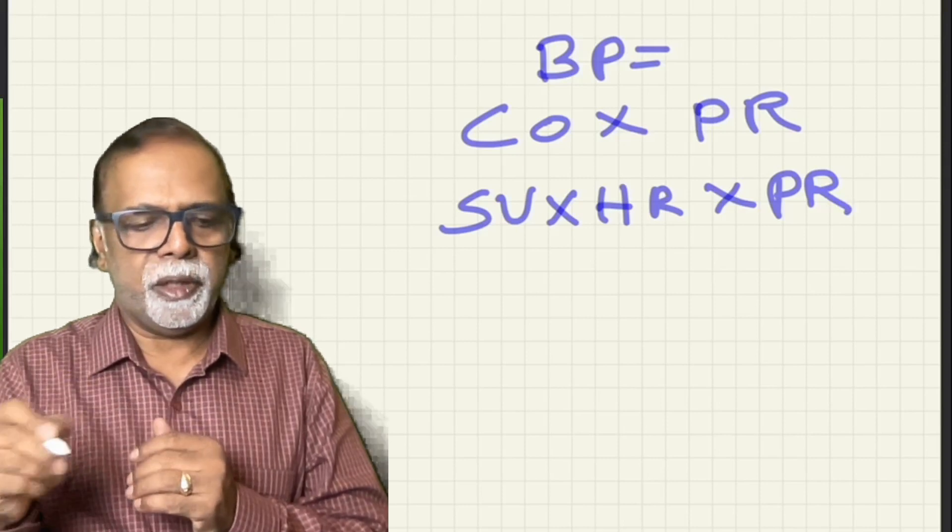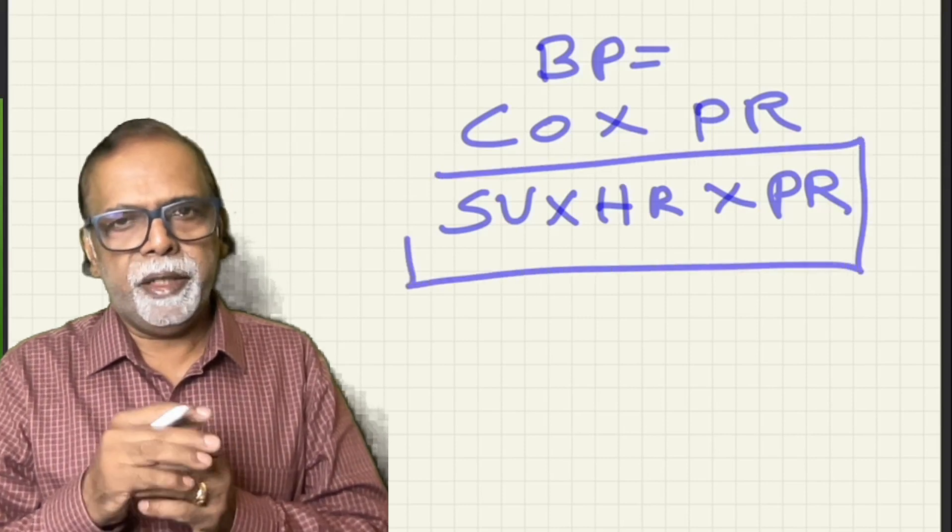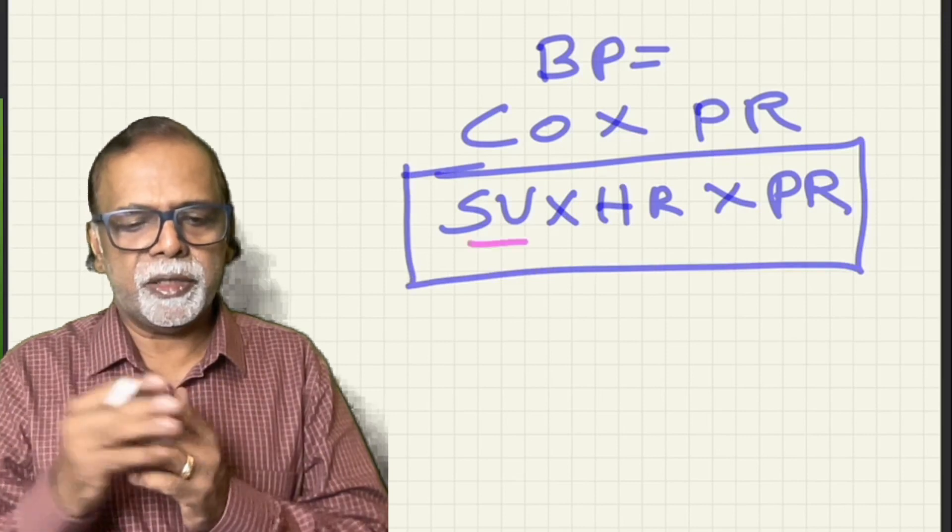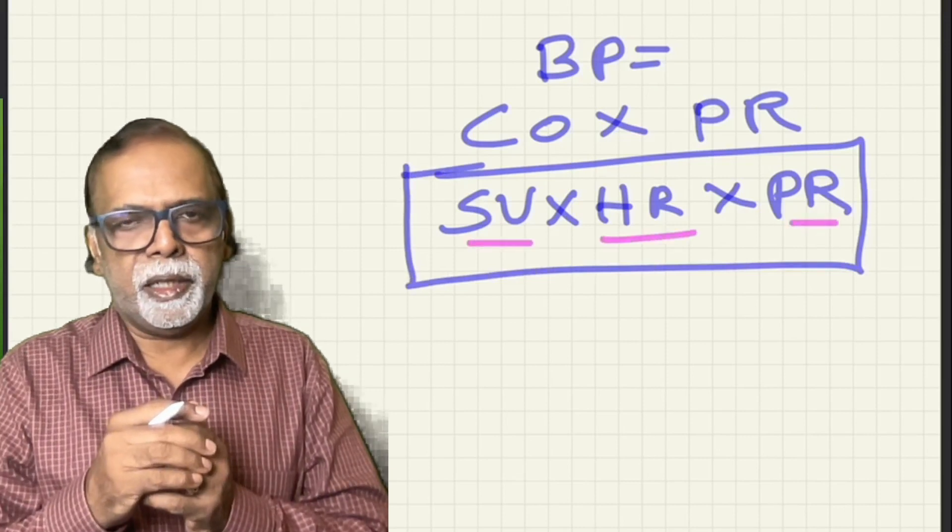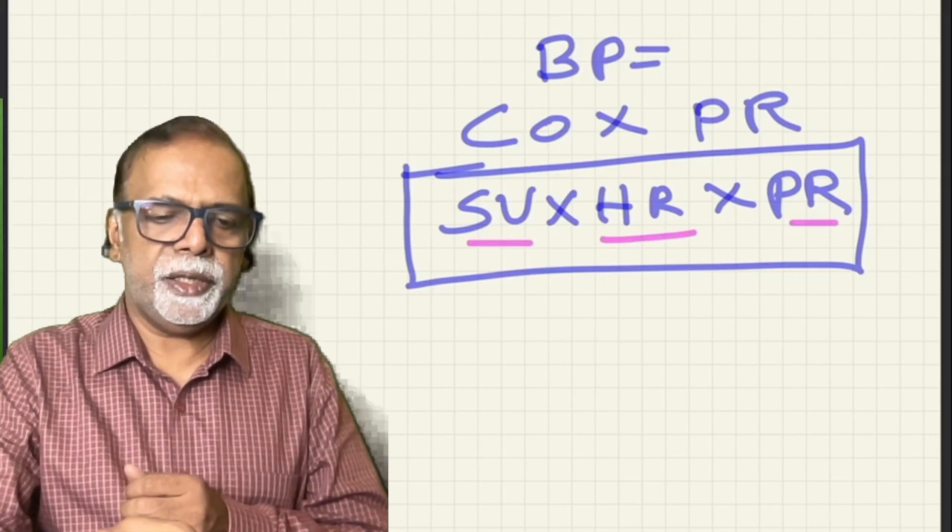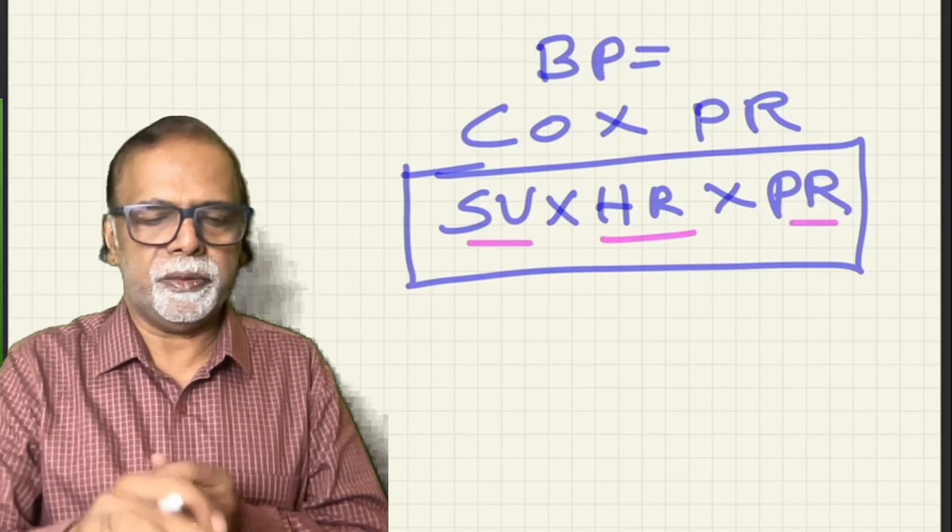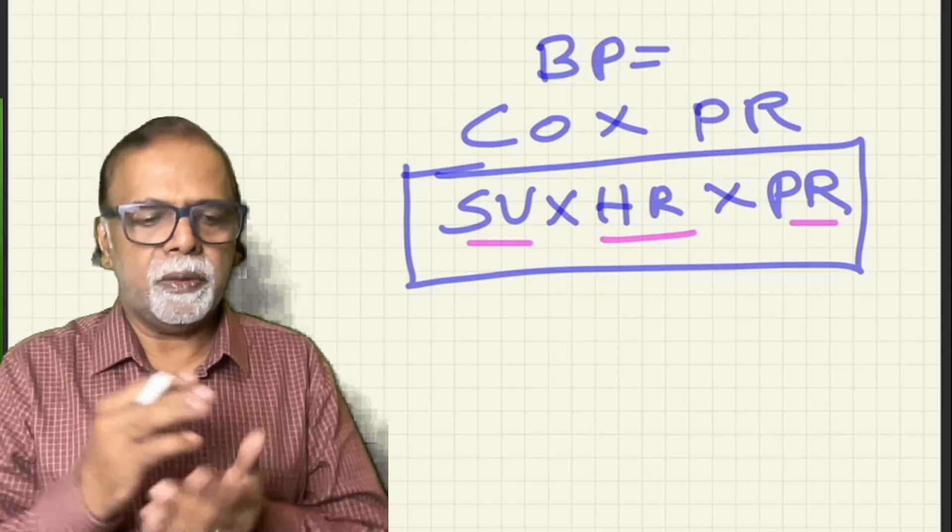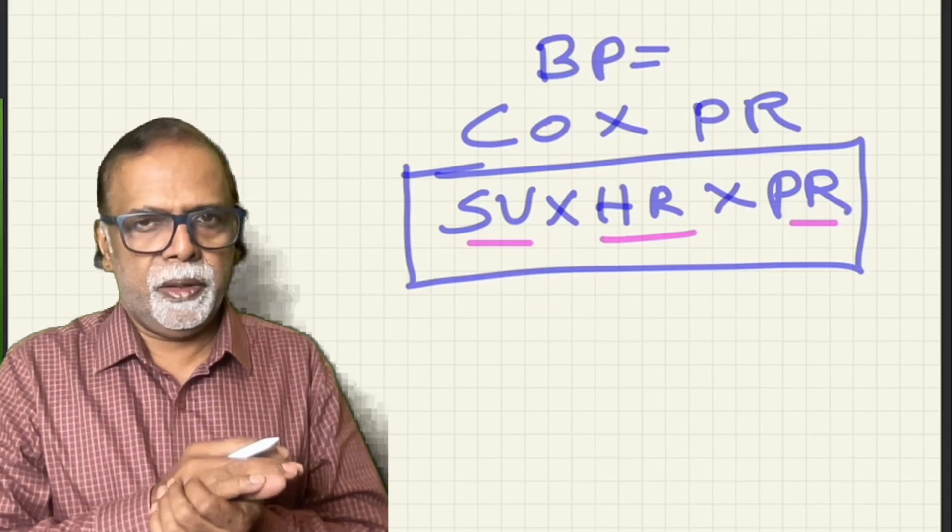So blood pressure is stroke volume times heart rate times peripheral resistance. Any factors that affect the stroke volume, heart rate, and peripheral resistance ultimately affect the blood pressure. So changes in any of these can be controlled, and that leads on to regulation of blood pressure.